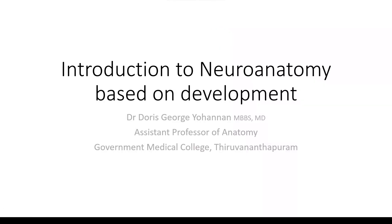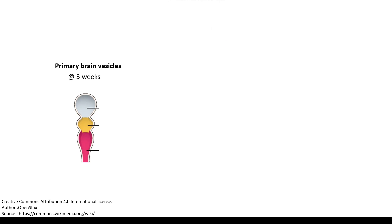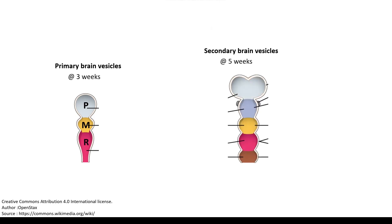We are continuing with the introduction to Neuroanatomy based on development. In the initial chalkboard diagram you have already learned that at three weeks you have three primary brain vesicles, consecutively termed as prosencephalon, midbrain mesencephalon, and the hindbrain which is rhombencephalon. They evolve at five weeks into secondary brain vesicles: the two telencephalic vesicles, the midline diencephalon, the mesencephalon remains, and the rhombencephalon develops into metencephalon and myelencephalon.